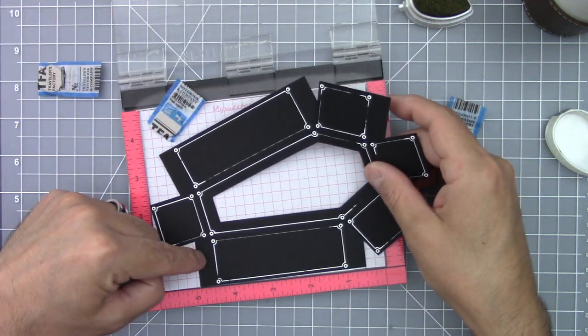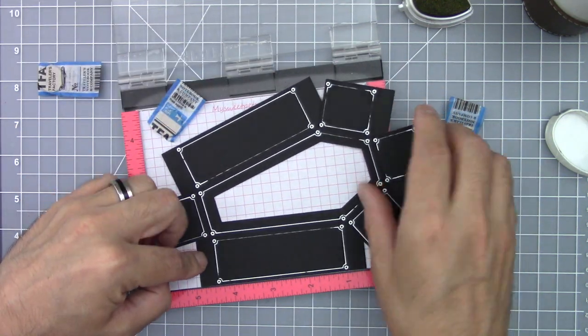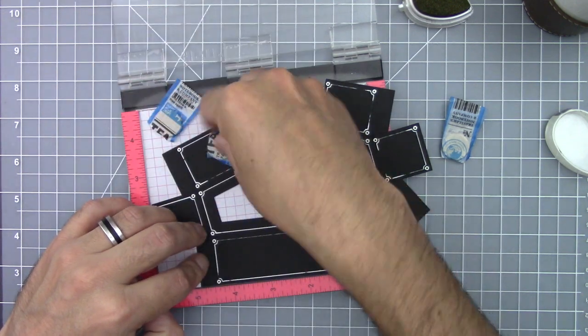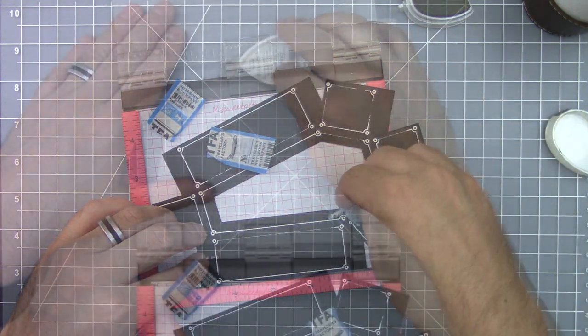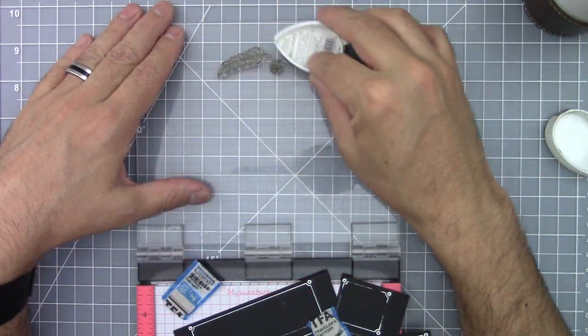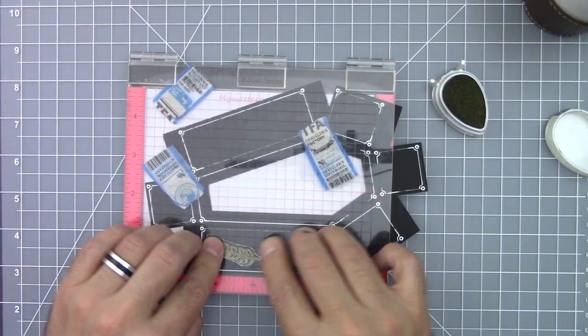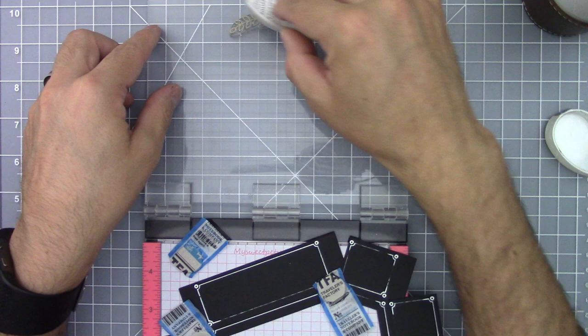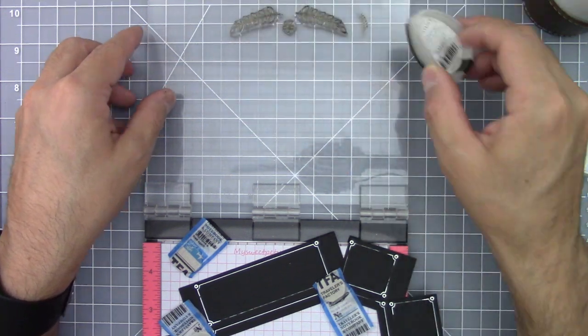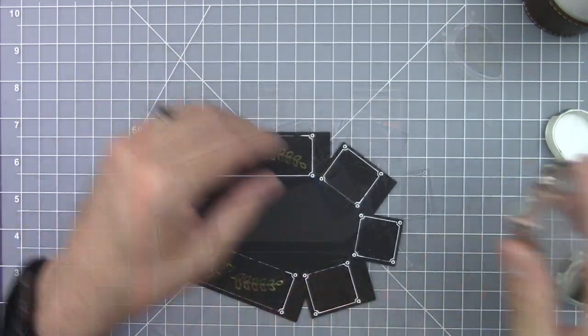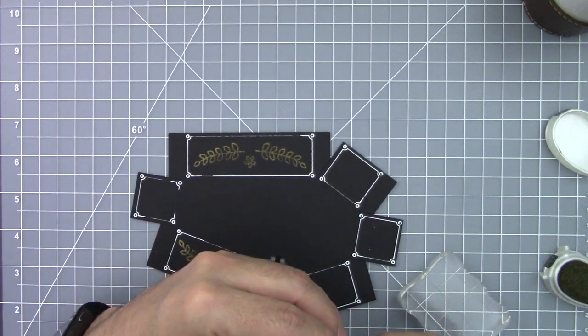Repeat this on the lid of the coffin matching the lines that you drew before on your MISTI paper guide. Then again ink up your stamp and give it a good press. Repeat this process on the other side of the coffin lid.